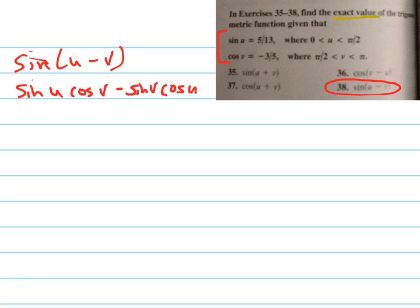All right, so all we have to do is find, well, we already know what the sine of u is. It's 5 twelfths. So we can substitute those in right now. I'm sorry, 5 thirteenths. That's 5 thirteenths.